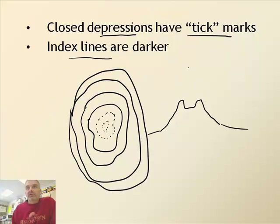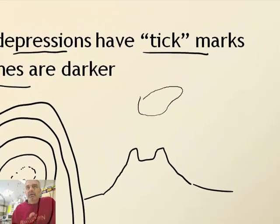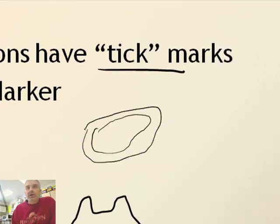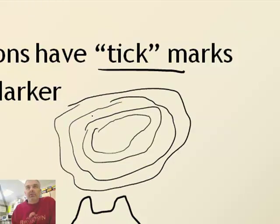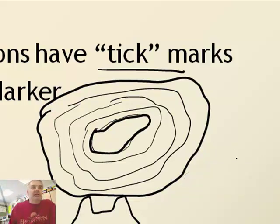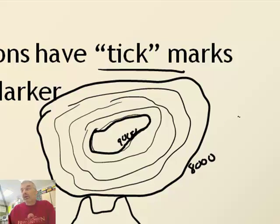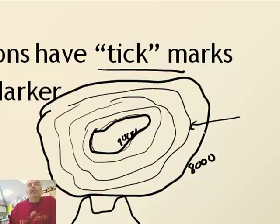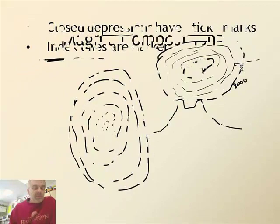The index lines are darker, usually every fifth line. So one, two, three, four, and then the fifth one is darker — these are called the index lines. Often the map will label an index line as 8,000 feet here and 9,000 feet there, without putting a number on the intermediate lines. You just figure out the contour interval by dividing.